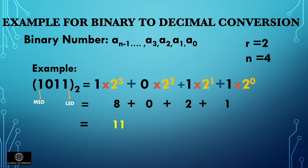For binary to decimal conversion using the radix-weighted positional number system, the radix or base is 2 for binary numbers. We identify R and N from the binary number and calculate: 1×8 + 0×4 + 1×2 + 1×1 equals 8 + 0 + 2 + 1, which equals 11. So 1011 in binary is the equivalent of 11 in decimal. The weight of each position in a number is expressed as a power of the base.